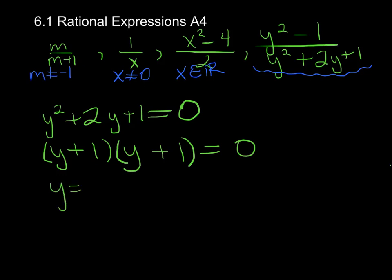So we end up with an answer of y equals negative 1. So if we plug in y equals negative 1 right here, we end up with 1 plus negative 2 plus 1, which is going to make the denominator 0. So we need to set this as our restriction. Y cannot equal negative 1, so that's our restriction for the last question there.